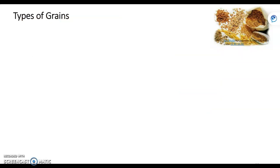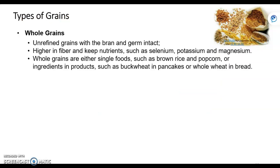So what are the types of grains available? Grains come in three main categories. Whole grains are unrefined — they have the bran and the germ intact. These are higher in fiber and nutrients are kept. They're either sold as a single food like brown rice and popcorn, or as ingredients in products such as buckwheat pancakes or whole wheat bread.